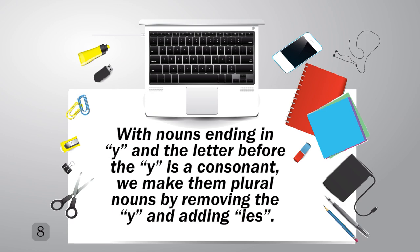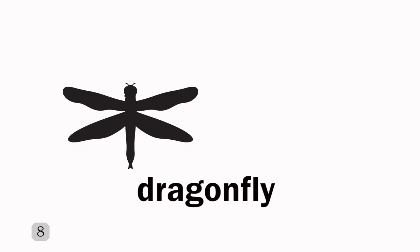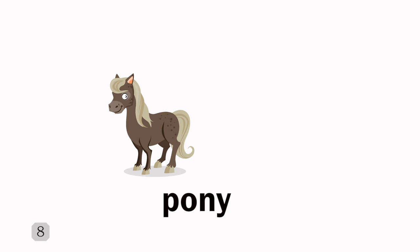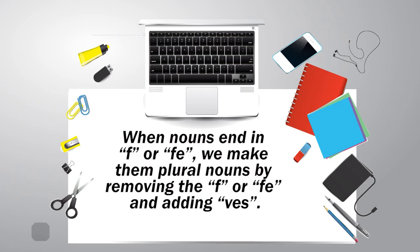With nouns ending in Y where the letter before the Y is a consonant, we make them plural nouns by removing the Y and adding IES. Dragonfly → Dragonflies. Baby → Babies. Pony → Ponies.